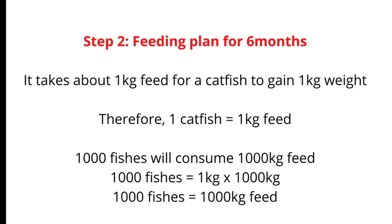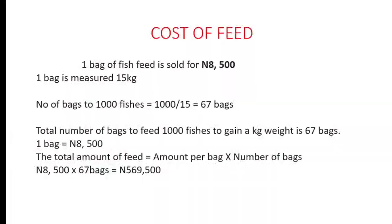Step 2: We are going to look at the feeding plan for 6 months. The feeding plan is the quantity of feed you need to have on ground to feed your 1000 fish. It takes about 1 kg of feed for a catfish to gain 1 kg of weight. Therefore 1 catfish requires 1 kg of feed. For it to attain that 1 kg weight, it needs to consume 1 kg of feed. Definitely 1000 fishes will consume 1000 kg of feed. So if you stock 1000 fishes, you need 1000 kg of feed on ground in order to take care of the 6-month production cycle.